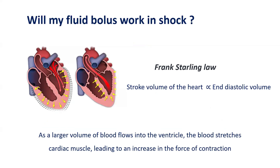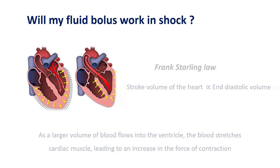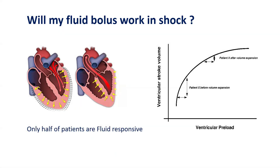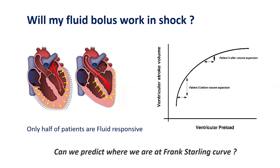We know from the Frank-Starling law that stroke volume is directly proportional to end-diastolic volume — the larger the volume of blood flowing into the right ventricle, the more the cardiac muscle is stretched, leading to an increased force of contraction. However, only half of patients are fluid responsive, so it is important to identify where we stand on the Frank-Starling curve to avoid giving excess fluids when the patient is not fluid responsive.